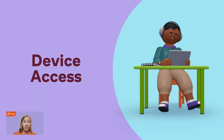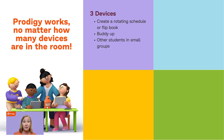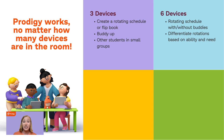Now let's talk about using Prodigy with varying access to devices. When I started using Prodigy, I only had three devices in my classroom, but Prodigy works no matter how many devices you have. If you have three devices, create a rotational schedule and a flipbook — you can use the Buddy Up model and have students work together while others are with you or in small groups. If you have six devices, you can use a rotating schedule with or without buddies, and differentiate these rotations based on ability and need.